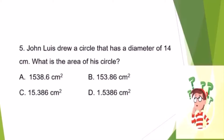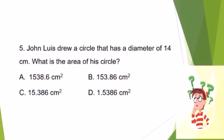Number 5. John Lewis drew a circle that has a diameter of 14 centimeters. What is the area? Is it A. 1538 and 6 tenths square centimeters? Letter B. 153 and 86 hundredths square centimeters? Letter C. 15 and 386 thousandths square centimeters? Or letter D. 1 and 5,386 ten thousandths square centimeters?